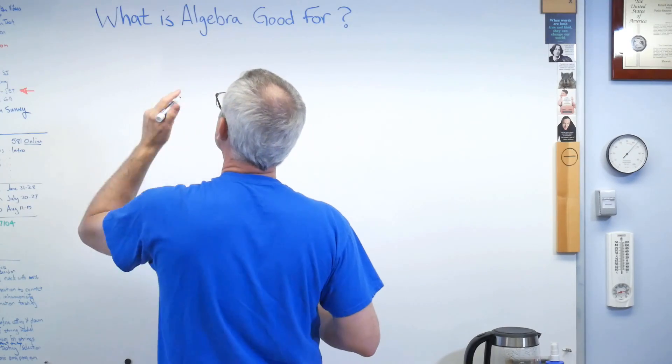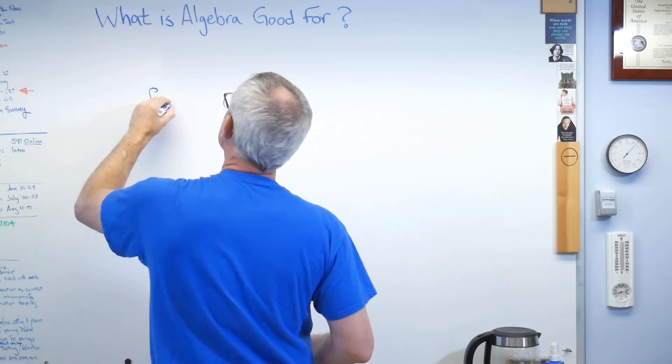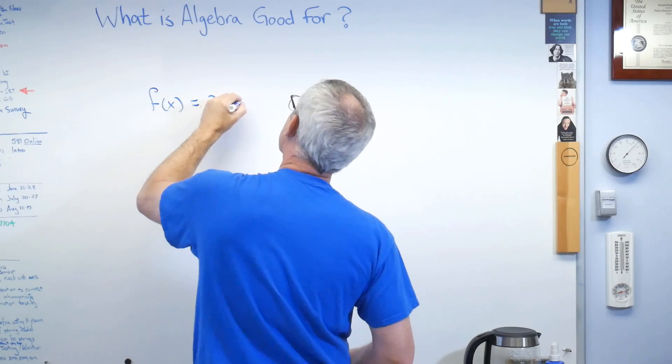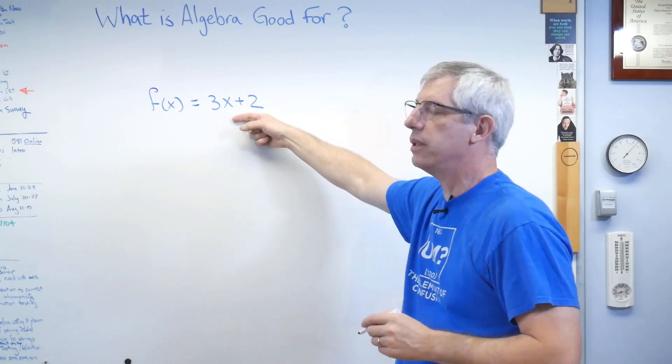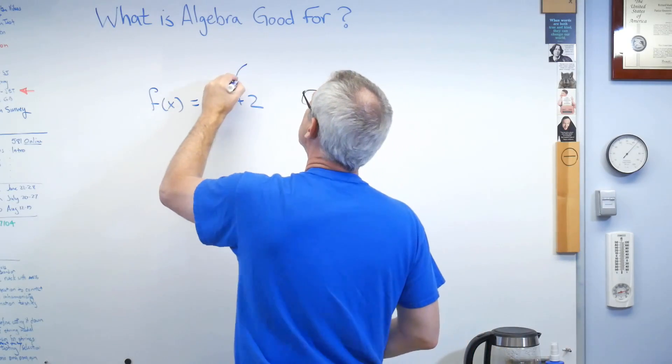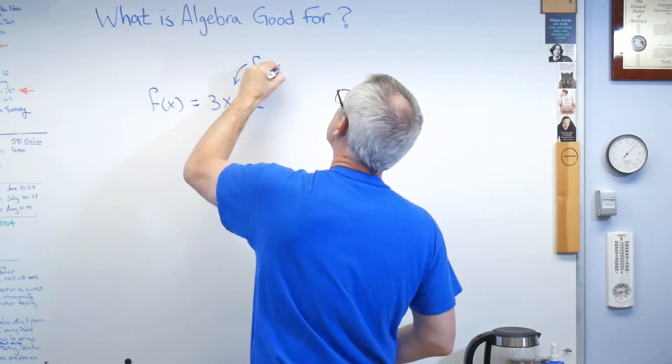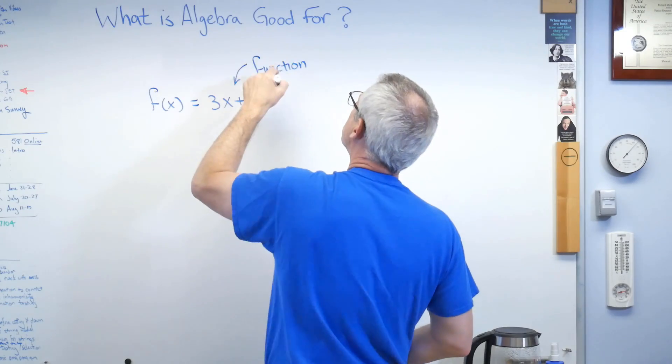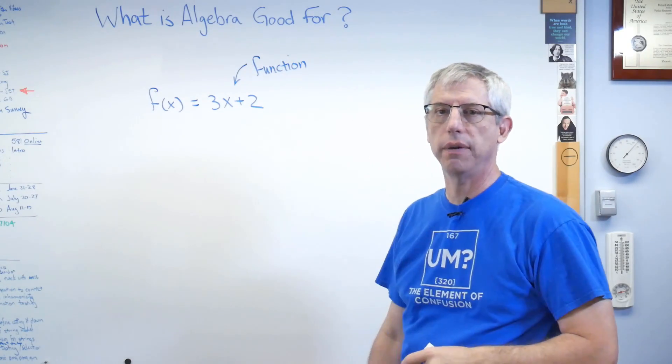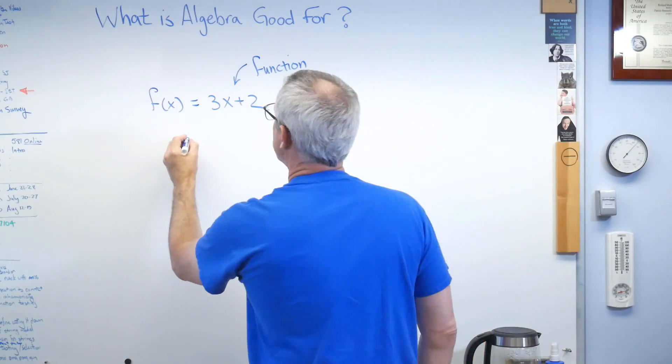Okay. Well, what would that look like? f of x is 3x plus 2. This is a mathematical expression. It's called a function. And a function is just a relationship between variables. I can push values of x into the equation and I can get values of f of x out of the equation.